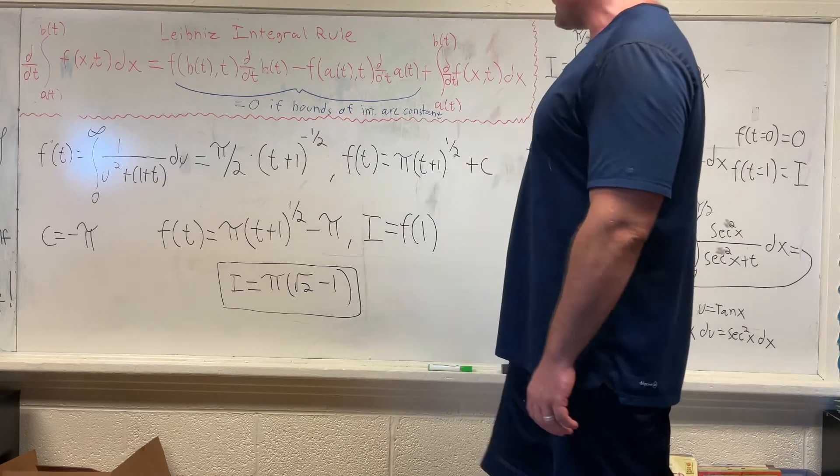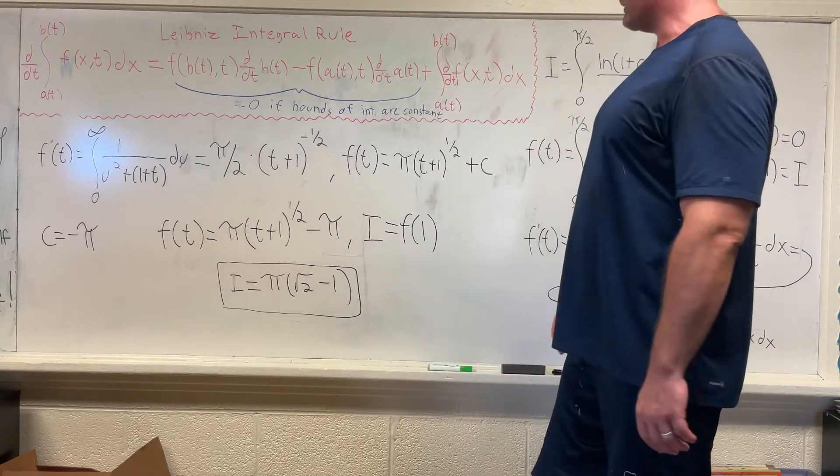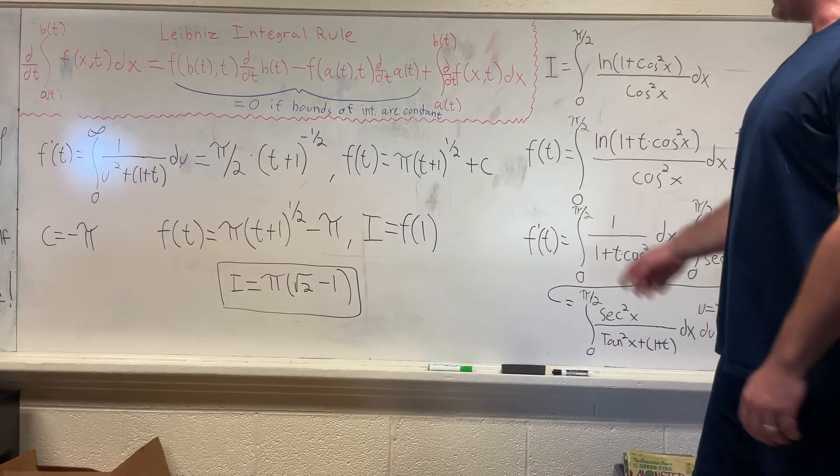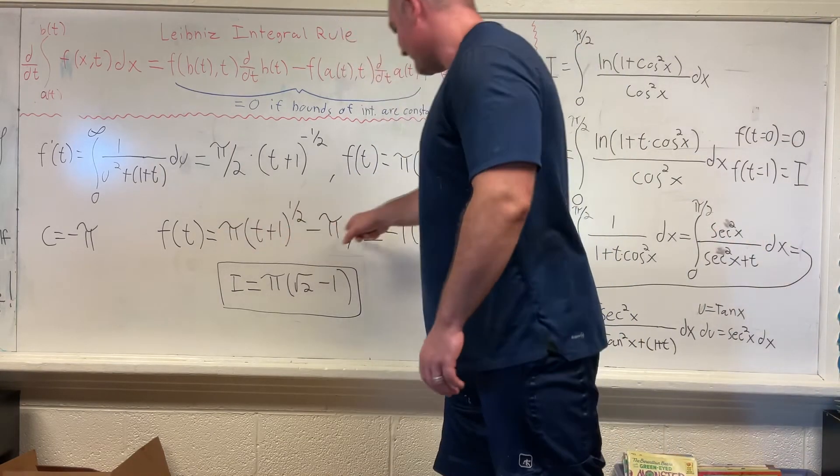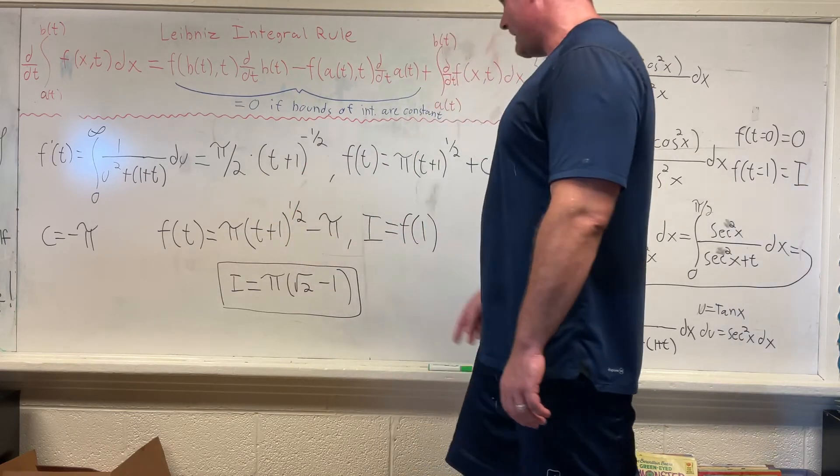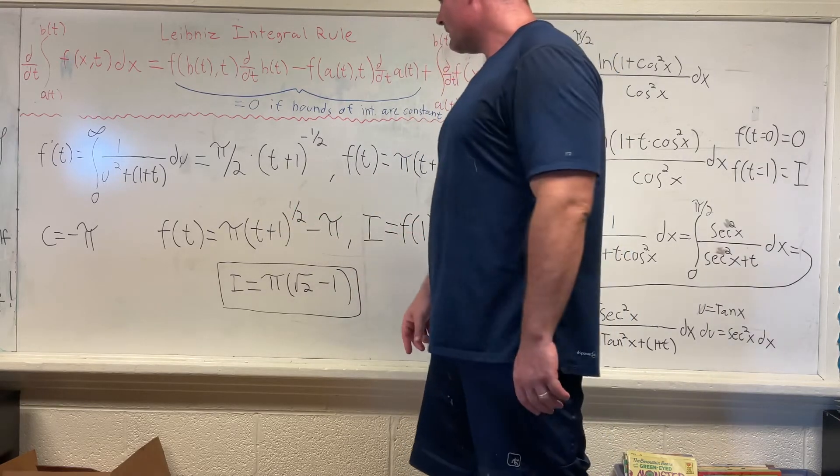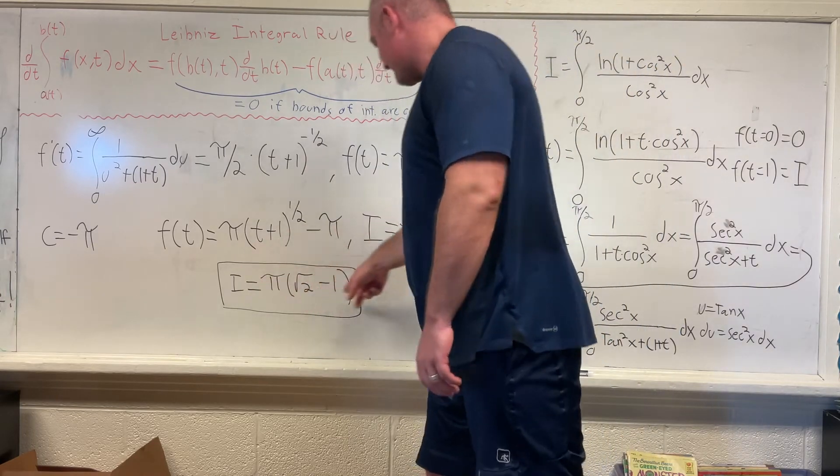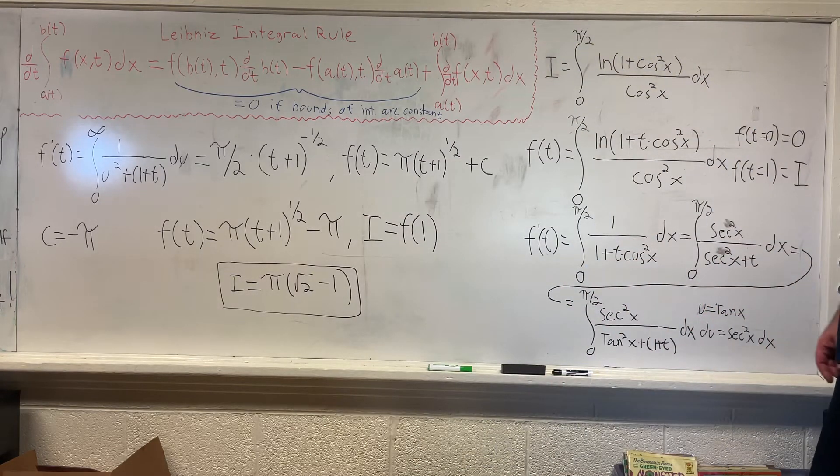Plugging that value in for c, we get that f(t) is equal to π times (t + 1)^(1/2) minus π. And then getting the answer to our original integral is as simple as plugging in 1 to this equation right here, giving us f(1), which is I, is equal to π times √2, or square root of 2, minus π. And factoring out the π gives you this: I is equal to π times (√2 - 1). And that's it.